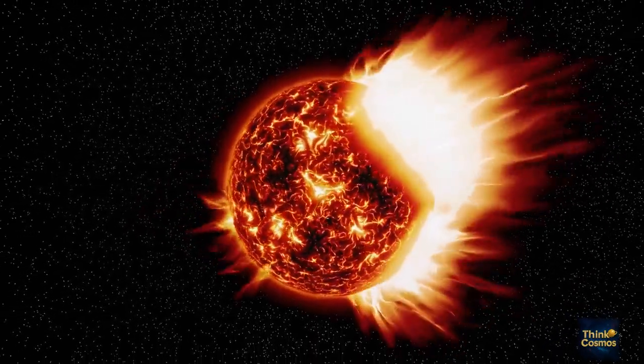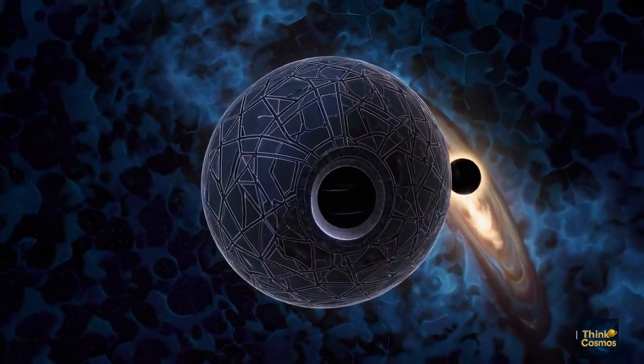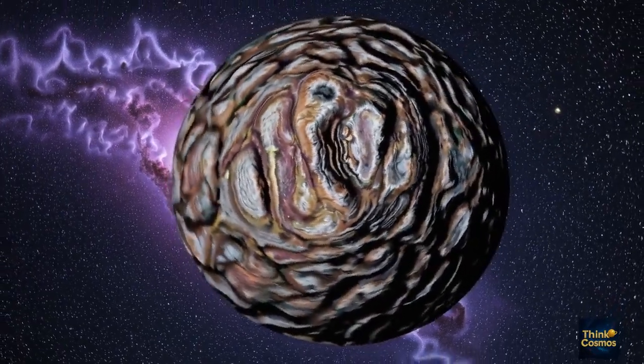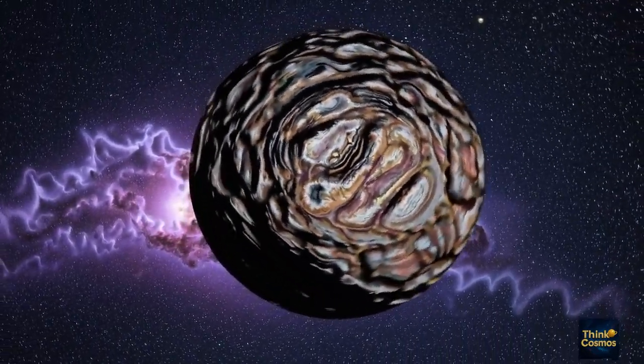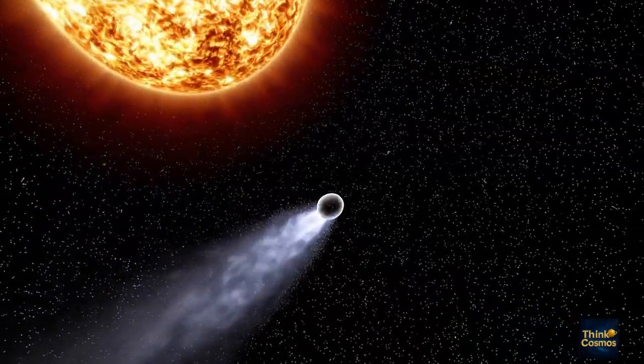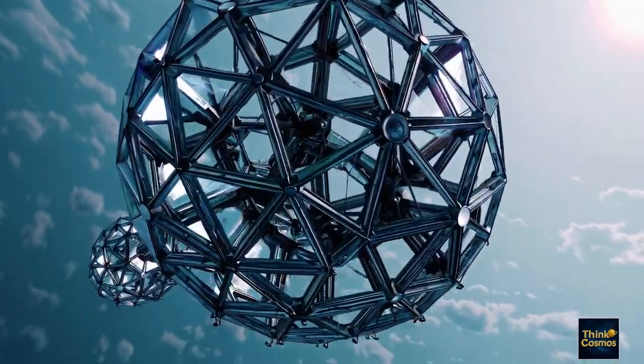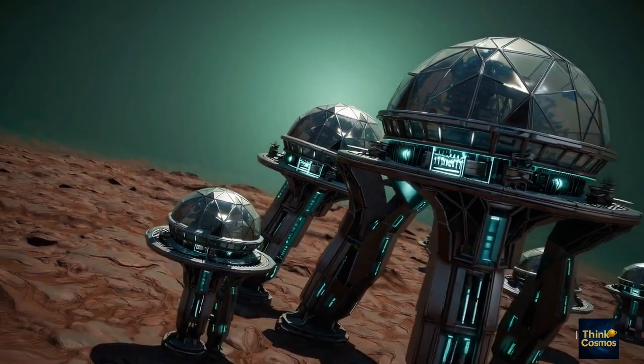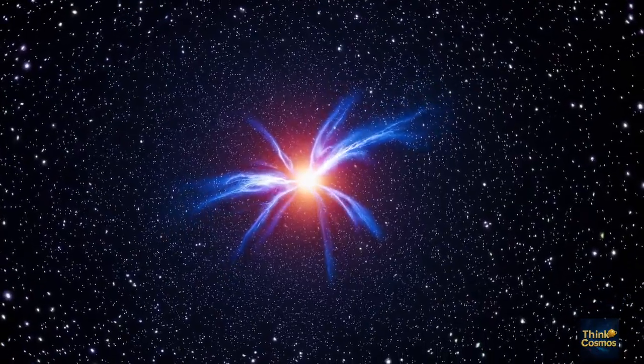To put this energy in perspective, one PeV equals 1,000 trillion electronvolts. The Large Hadron Collider accelerates protons to about 6.5 teraelectronvolts (TeV). This neutrino had roughly 30,000 times more energy than that. It's roughly equivalent to the kinetic energy of a baseball flying at 100 kilometers per hour, packed into a particle with near-zero mass.